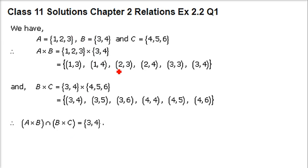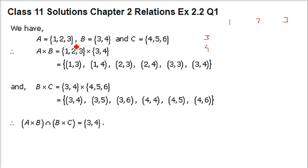So A cross B is what? I'll tell you one way — we'll do it in this way, but there is another method so that the ordered pairs can be made easily. So write A as 1, 2, 3 and B here. In A cross B, always remember that the first member of the ordered pair should come from A.